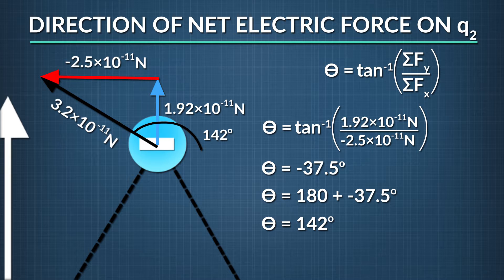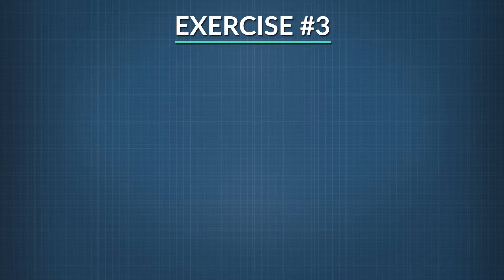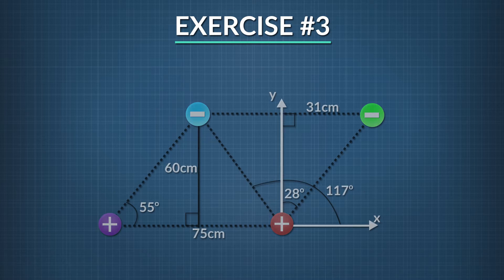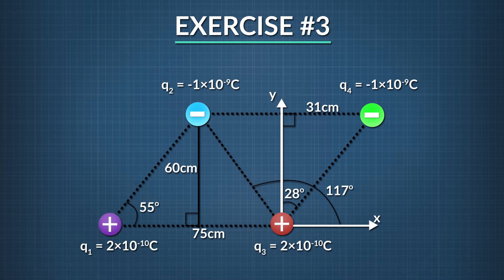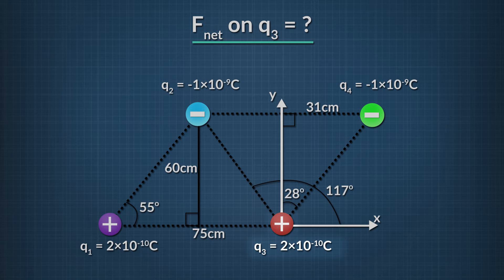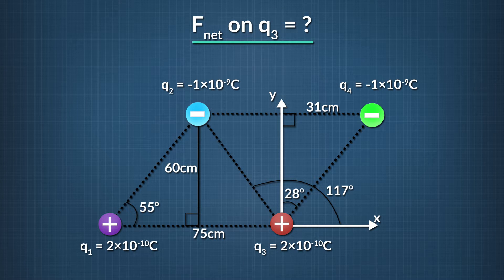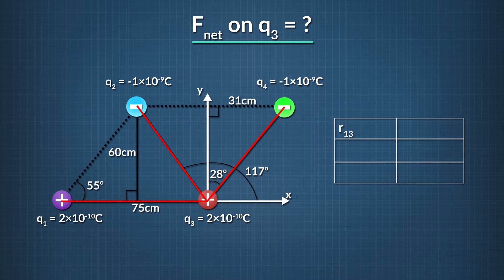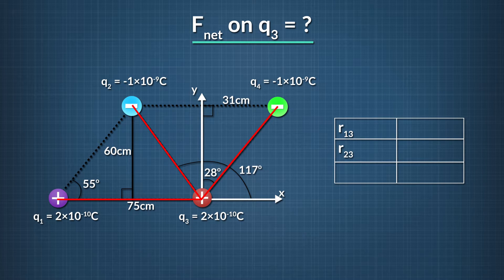Let's do one last Coulomb's Law exercise, this time with four charges arranged in a quadrilateral. We're given the amount of each charge, and we want to figure out what the total electric force is — magnitude and direction — on charge q3. We'll need to know how far from q3 the rest of the charges are, so let's solve for those distances: r13, r23, and r43.